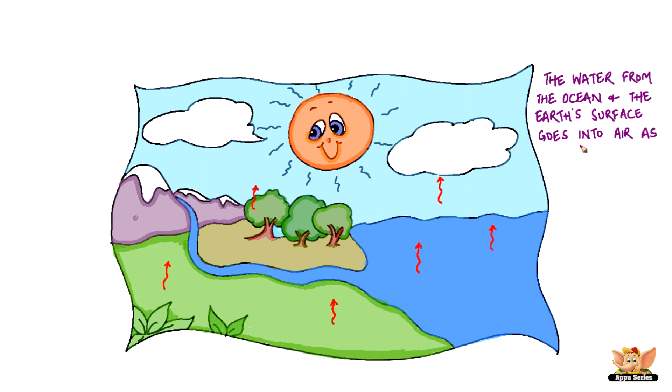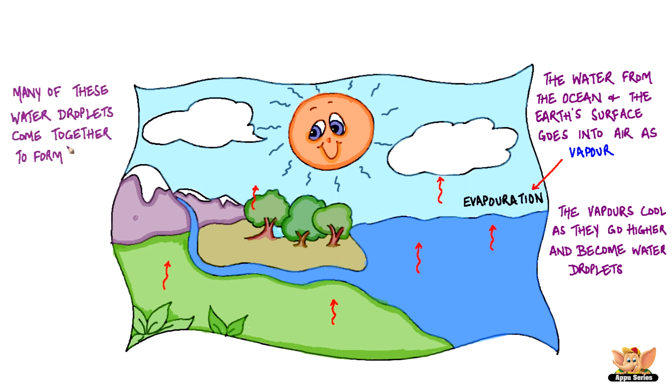So the water from the ocean and the earth's surface goes into air as vapour by the process of evaporation. The vapours cool as they go higher and become water droplets. Many of these water droplets come together to form clouds. When the clouds get heavier, they fall down on earth as rain, snow or hail.